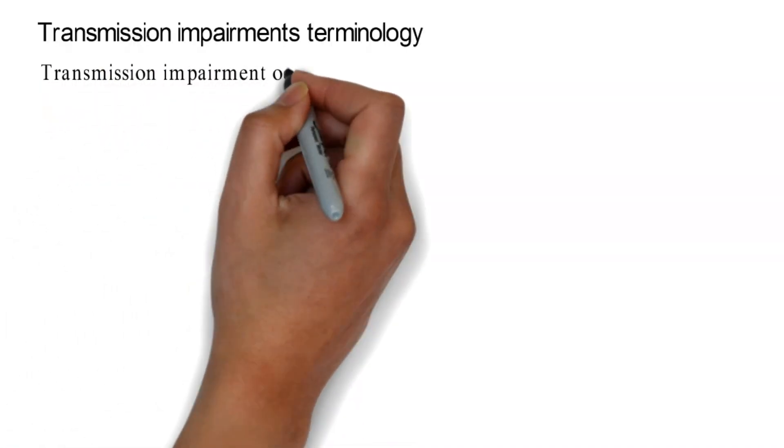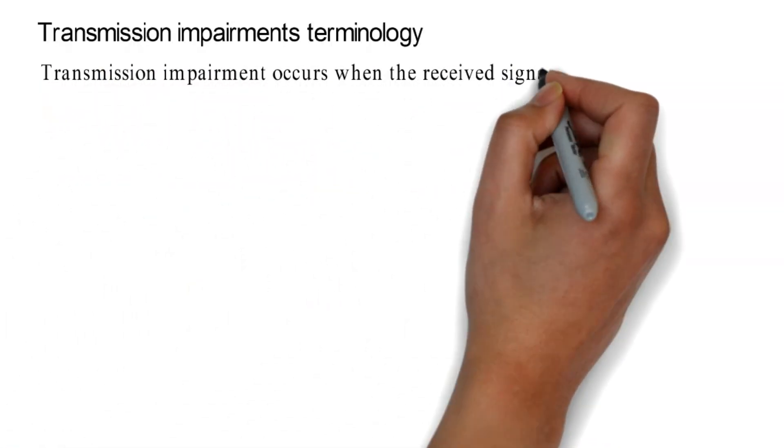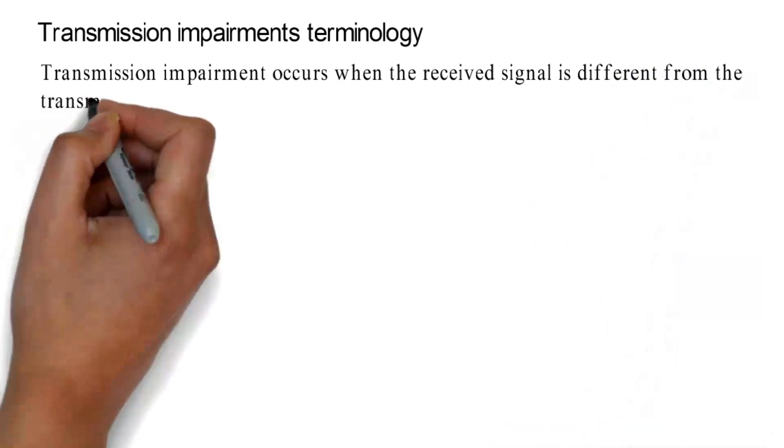Transmission Impairments Terminology. Transmission impairment occurs when the received signal is different from the transmitted signal.